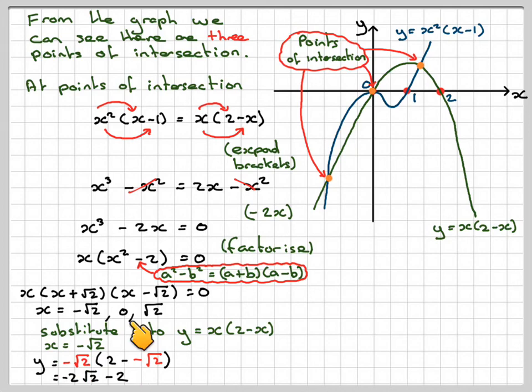For the one where x = 0, we already know the y coordinate is equal to 0, so we won't bother with that. But when x = √2, we're going to have y = √2(2 - √2). So it's going to give me 2√2, and then √2 times √2 gives me 2, so 2√2 - 2.